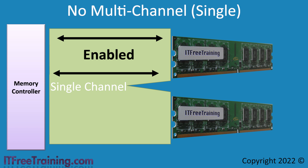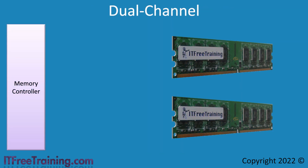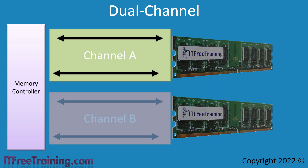While the first memory module is being accessed, the second memory module cannot be accessed. When dual-channel is used, the memory controller is able to access both memory modules at the same time. By being able to access two memory modules simultaneously, this increases the amount of data that can either be read or written to the memory modules at once.